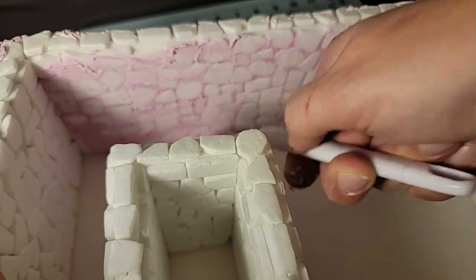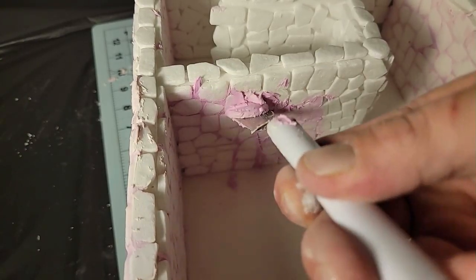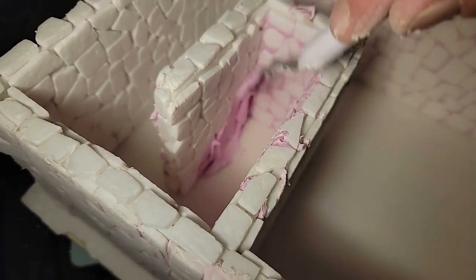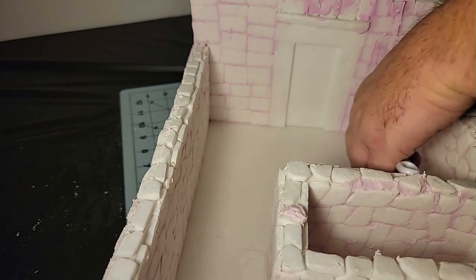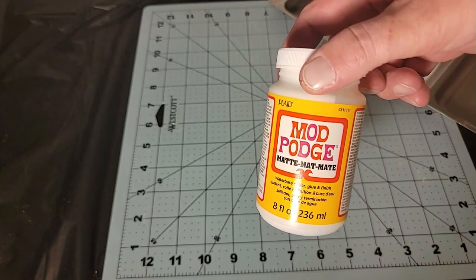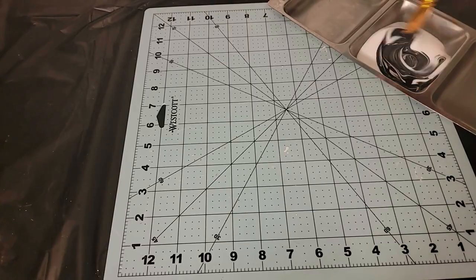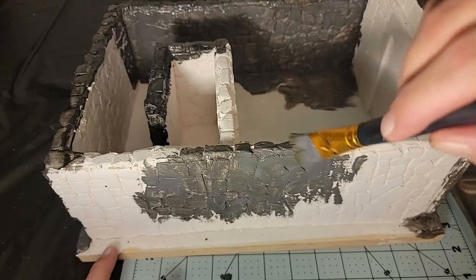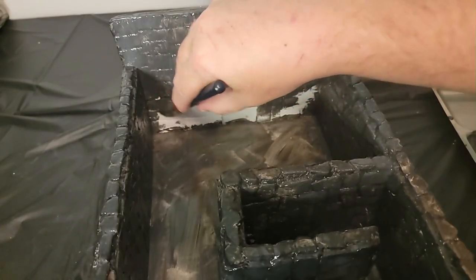My only issue with this process was that the spackle mostly covered up the texture I added to the foam with the tumbler and the aluminum foil, but the spackle has a rough, stone-like texture, so I wasn't too upset about it and it didn't make much of a difference in the end. To give the whole piece a bit of protection from the spray paint primer I plan to use later, and to give the props I plan to use something else to stick to, I made a mixture of Mod Podge and black paint and gave the whole thing a quick coat.